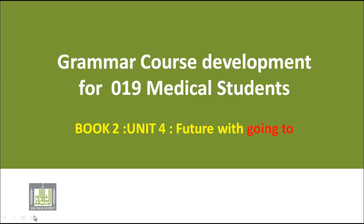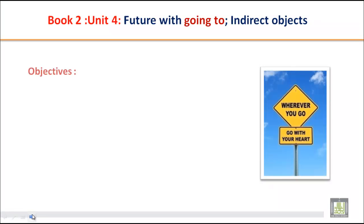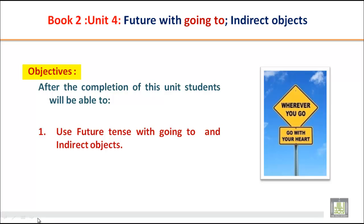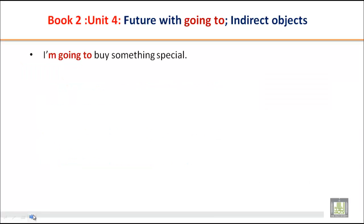Bismillahirrahmanirrahim. Book 2, Unit 4: Future with Going To. Dear students, in this lesson we will study about future with going to. Let's look at the objectives of this unit. After completing this unit, you will be able to use future tense with going to, indirect objects, and also present continuous for the future.